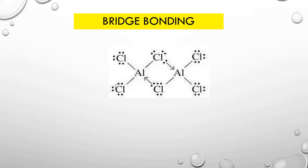In a coordinate covalent bond, a lone pair of electrons is involved. Chlorine has eight electrons in its valence shell while aluminum has six. Chlorine donates an electron pair to aluminum for the formation of a coordinate covalent bond. Similarly, the chlorine atom of one AlCl₃ donates an electron pair to the aluminum of the other AlCl₃, forming a coordinate covalent bond. This type of bonding is known as bridge bonding, and it takes place in electron deficient compounds.